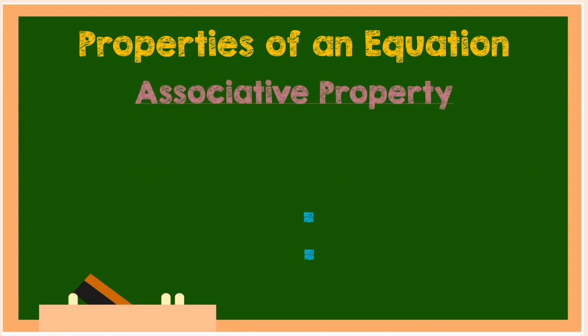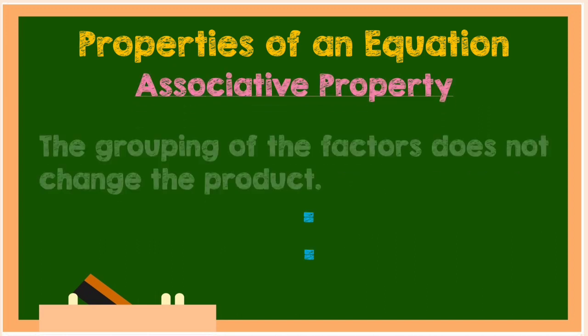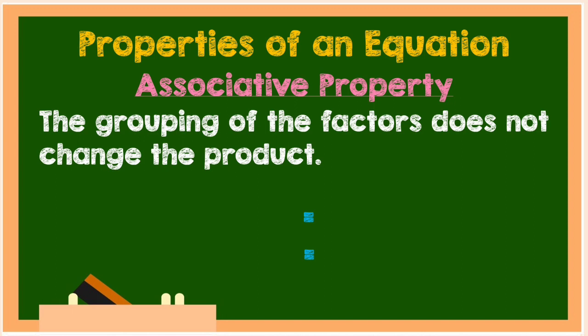Another one is associative property. The grouping of the factors does not change the product. For example, 6 times the quantity of 2 times 5 is equal to quantity 6 times 2 times 5.